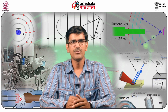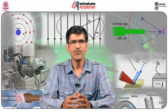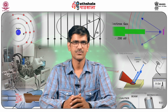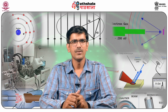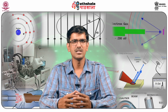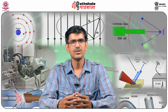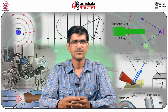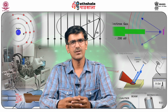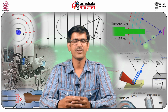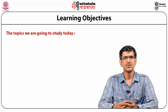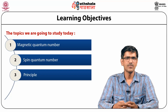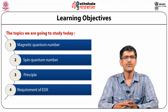To begin with, I would like to give you a brief of this module. Initially, we will study the basics of EDX. Then we will proceed to the background or history of EDX, including inventions and discoveries along with the names of scientists and the year. Next, we will go through the physical groundwork, various quantum numbers, their classification, magnetic quantum number, spin quantum number, principle of EDX, and requirement of EDX.